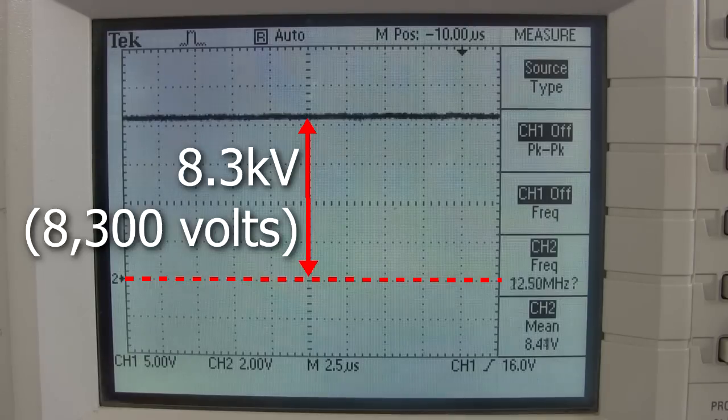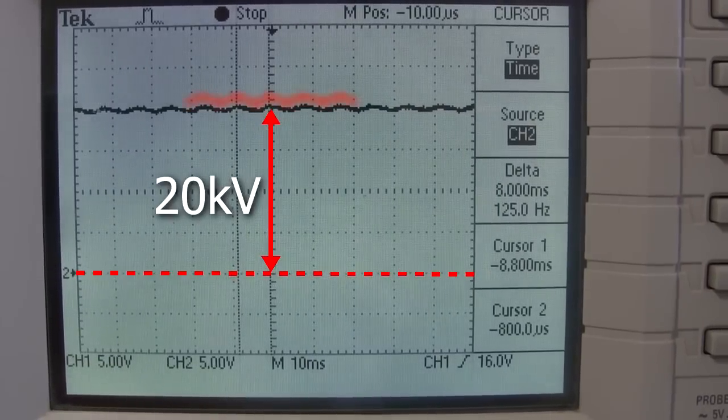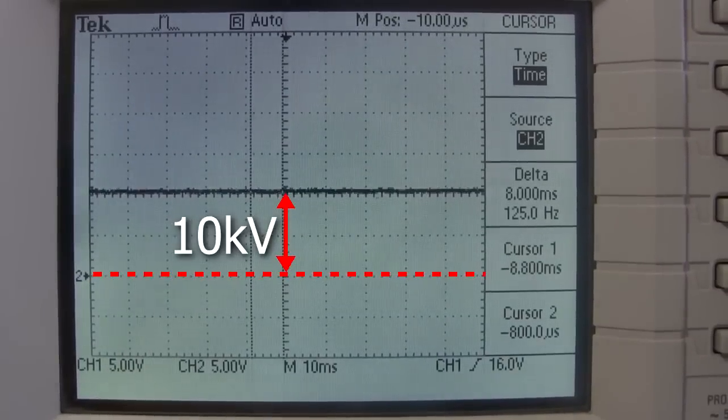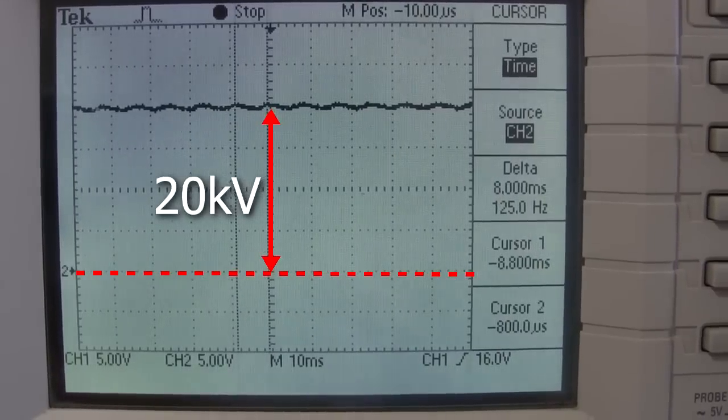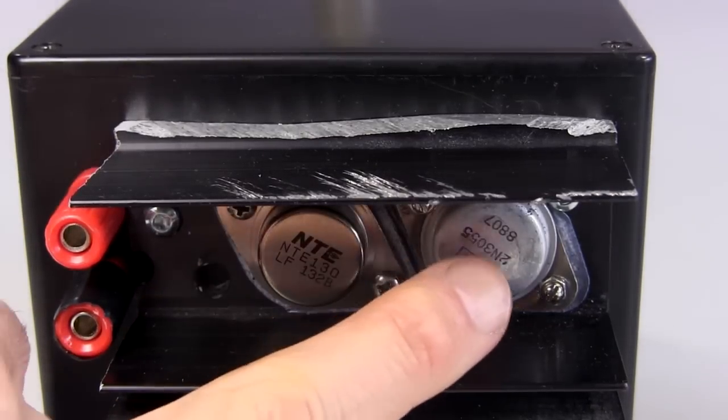This is 8.3 kilovolts, or 8300 volts. I turned it up to 20 kilovolts, and you can see that there's this 120 hertz ripple on top. But at 10 kilovolts, there's no noticeable ripple. 20 kilovolts took around 20 volts DC input. Any higher and the transistors heated up too fast.